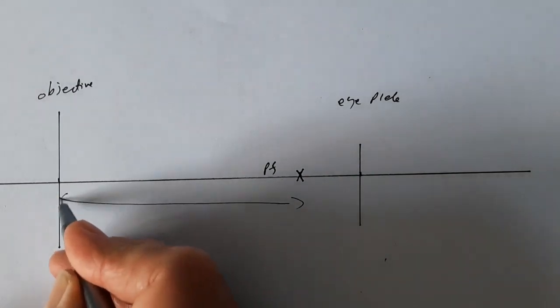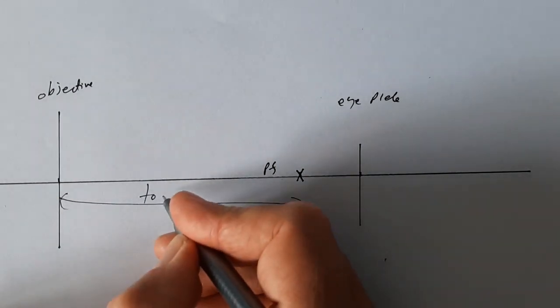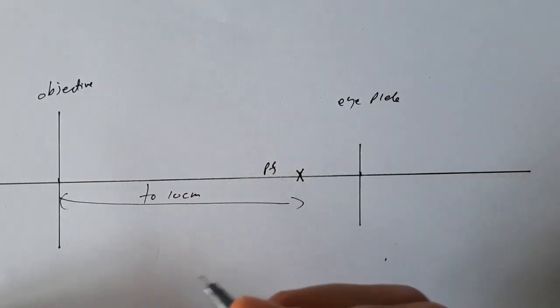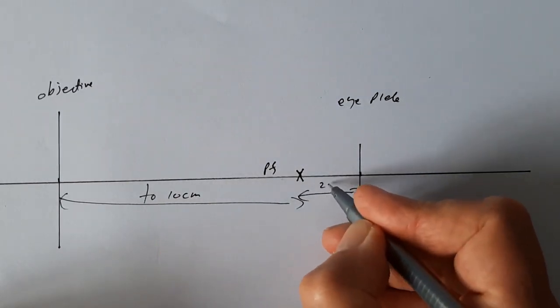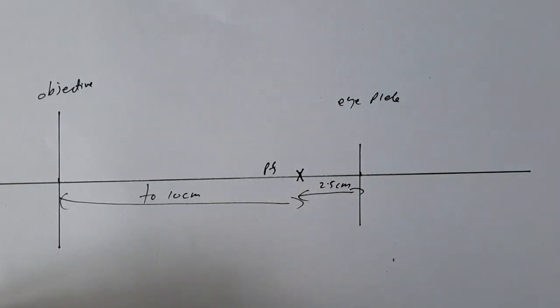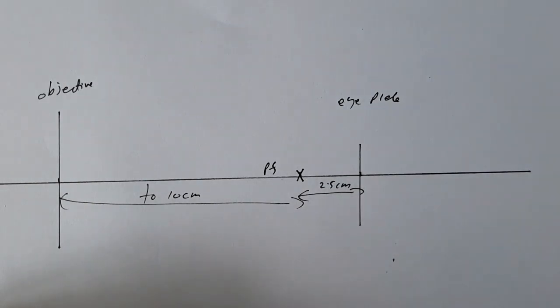So this distance here is fo, the focal length of the objective lens, which I've set to be 10 centimeters using the ruler. And this is 2.5 centimeters, the focal length of the eyepiece lens.